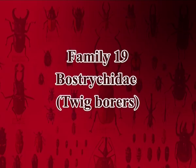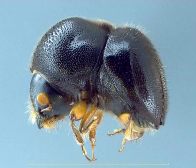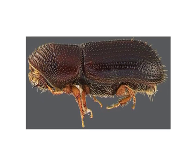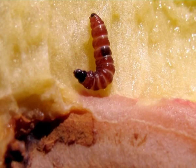The nineteenth family is Bostrichidae, called twig borers. They are elongate, cylindrical; head is bent down. Surface of pronotum is usually rugose. Antennae have less than 11 segments and the last three form a club. Elytra is flat and sculptured. Body is truncate. Larvae are wood borers and also attack stored grains. Example: Rhizopertha dominica.